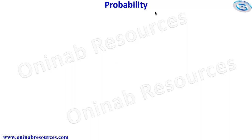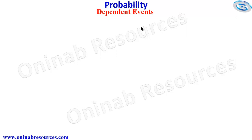Hello out there. Welcome to this tutorial on probability. In this video, we'll be looking at dependent events. Dependent events are events in which the occurrence of one affects the occurrence of the other.